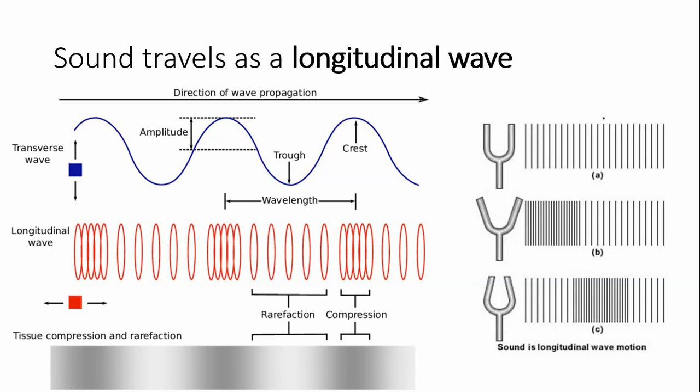Each section of the medium in which a longitudinal wave passes oscillates over a very small distance, whereas the wave itself can travel long distances. Wavelengths, frequency, and wave velocities all have meaning for a longitudinal wave. The wavelength is the distance between successive compressions, and frequency is the number of compressions that pass a given point per second.